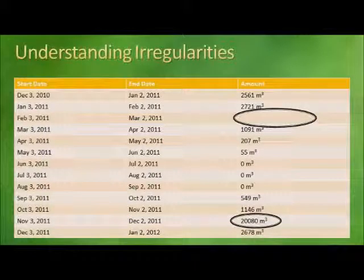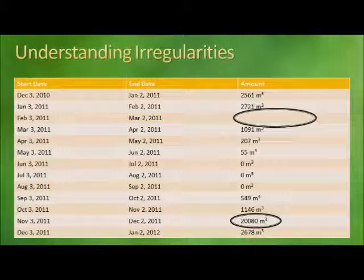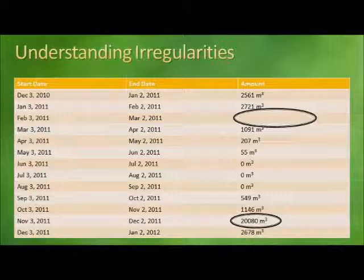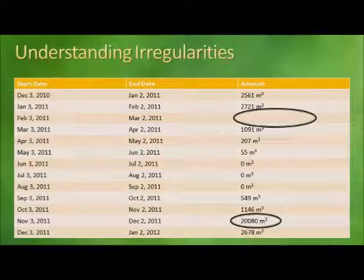Looking at the data table for this graph, it's immediately apparent why the gap and irregularity have occurred. There is a data gap from February 3rd, 2011 to March 2nd, 2011. Lower down, there is an abnormally high number for the period of November 3rd, 2011 to December 2nd, 2011 — most likely due to an extra zero having been added at the end, a common typographical error. However, before correcting an irregularity, you should always consult the source — in this case a natural gas bill or meter reading — to ensure the number is not indeed correct. Now let's examine ways in which we can fill this data gap.